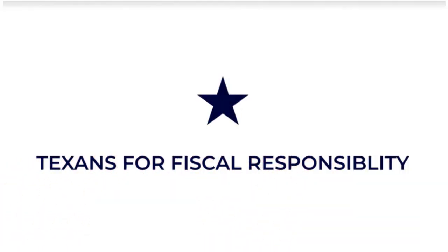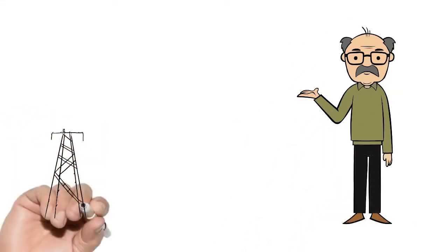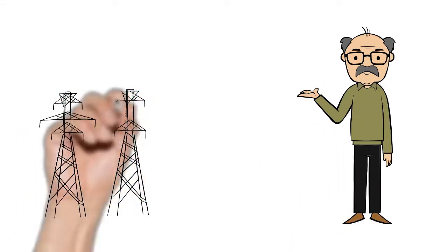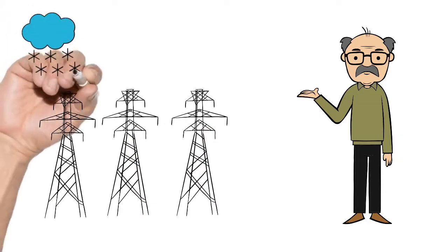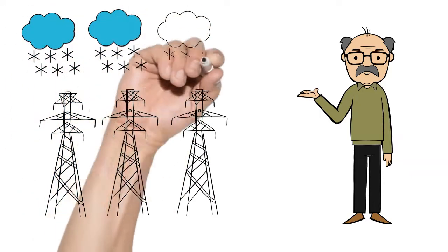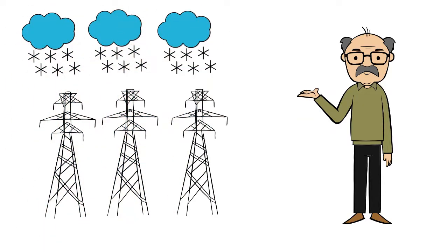Howdy, I'm Kerry Cheshire, President of Texans for Fiscal Responsibility, and today we're going to be talking about why Texas suffered an energy crisis in February 2021, and what we can do to strengthen our state and ensure Texans aren't left out in the cold next winter, or roast this summer.